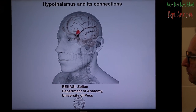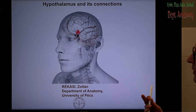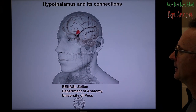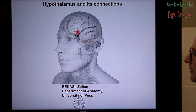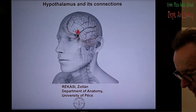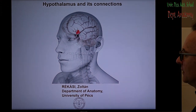Dear students, after the cortex, we should return to the diencephalon to describe the hypothalamus, because this is the highest vegetative center. Before we describe the endocrine organs, I'd like to show the functions and the parts of the hypothalamus first.